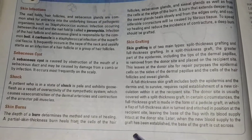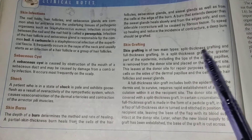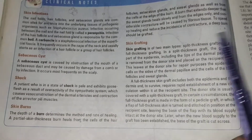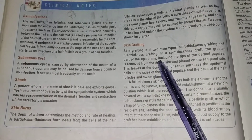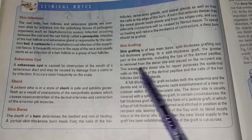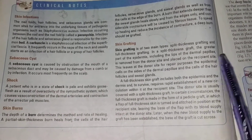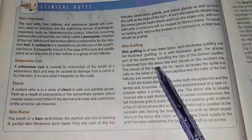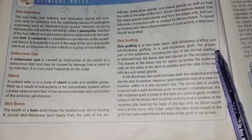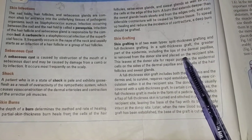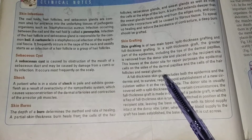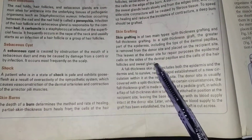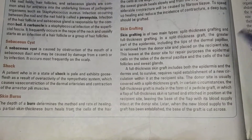Skin grafts are of two main types: split thickness grafts and full thickness grafts. In a split thickness graft, the greater part of the epidermis including the tips of the dermal papillae is removed from the donor site and placed on the recipient site. This leaves the donor site for repair purposes using epidermal cells on the sides of the dermal papillae and the cells of hair follicles and sweat glands.